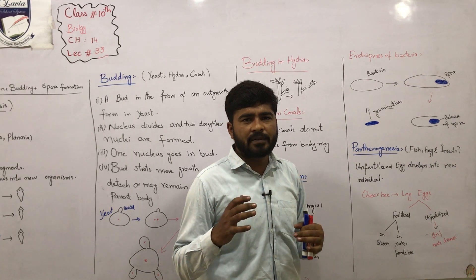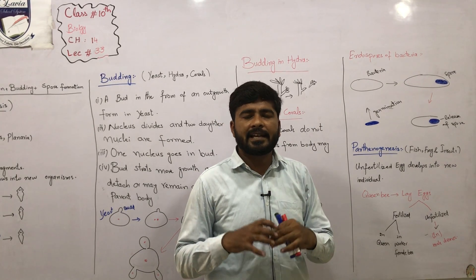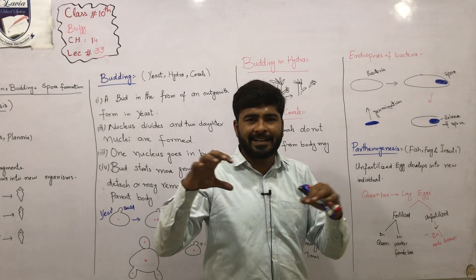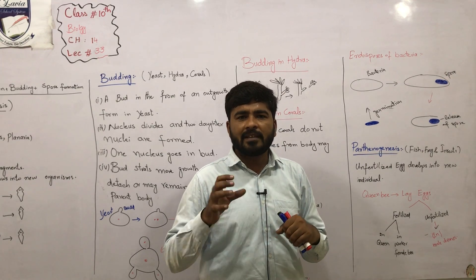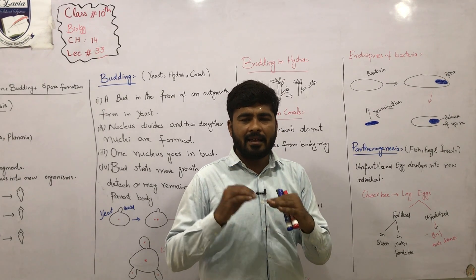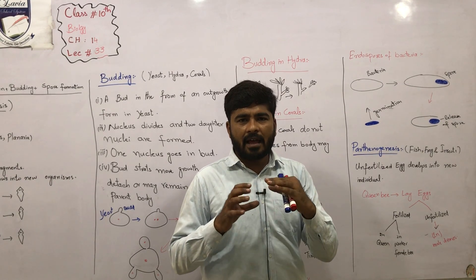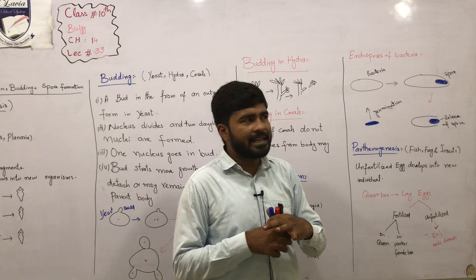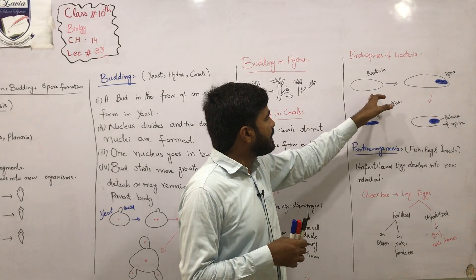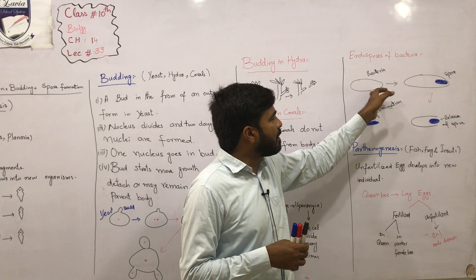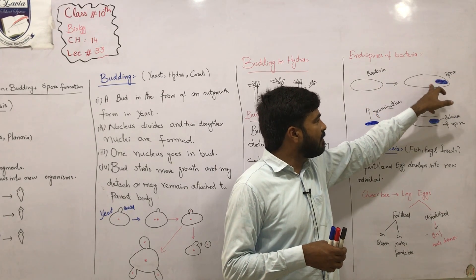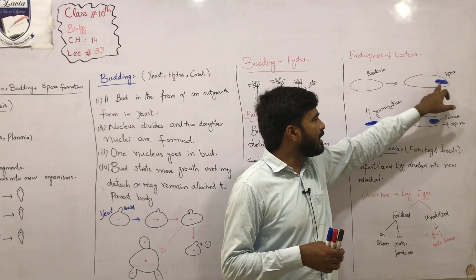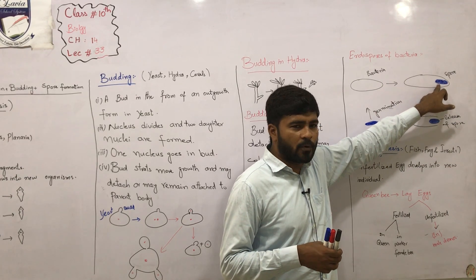Vegetative bacteria — when bacteria falls, then we call it vegetative. Spores are in unfavorable conditions. And when bacteria falls, then the structure is in a structure. It is stored and it is stored.